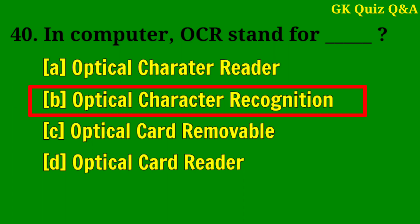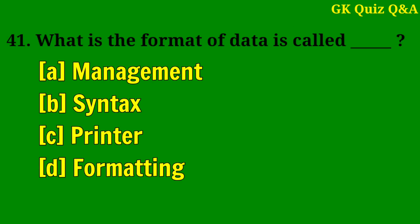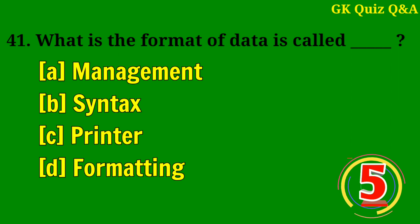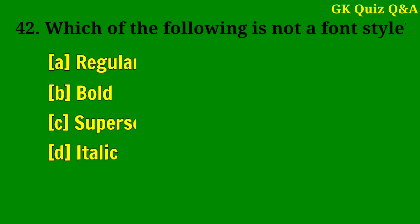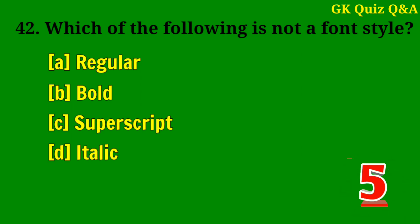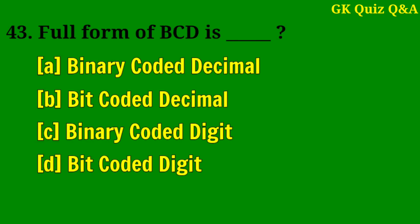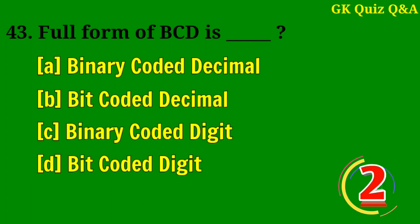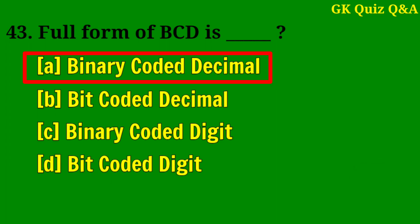What is the example of RAM and ROM? Answer C: Storage device. In computer, OCR stands for — Answer B: Optical Character Recognition. What is the format of data called? Answer B: Syntax. Which of the following is not a font style? Answer C: Superscript. Full form of BCD is — Answer A: Binary Coded Decimal.